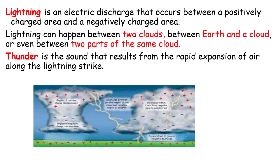Electrons move from the negatively charged side to the positively charged side. Lightning can happen between two clouds, or it can happen between the earth and a cloud.